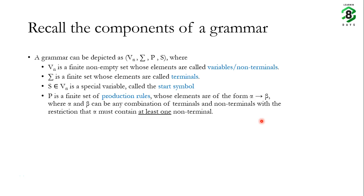In the last class we discussed the components of a grammar and we saw that a grammar can be depicted as a four-tuple Vn, Sigma, P and S, where Vn is a finite non-empty set whose elements are called variables or non-terminals. Usually the elements of this set are denoted by uppercase letters. Sigma is a finite set whose elements are called terminals, usually denoted by lowercase letters or digits.